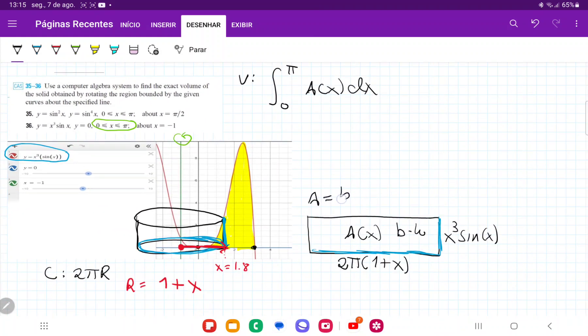And so area is equal to base times height, which is equal to 2 pi times (1 plus x), and then times x cubed sine of x. And so that's the expression for my area. It means that whenever I take any value of x between 0 to pi, if I plug it into this expression, I'm going to get the area of the cylinder that wraps around the line x is equal to negative 1.